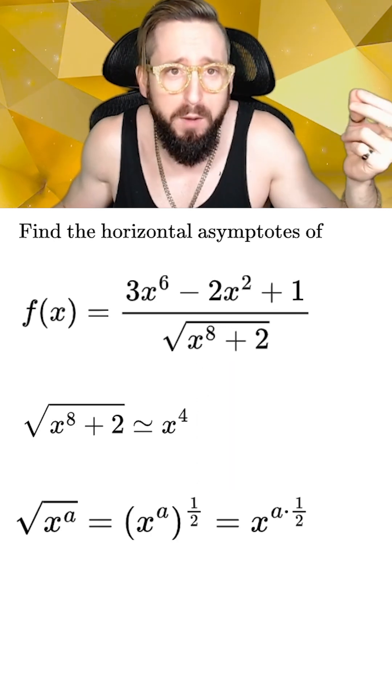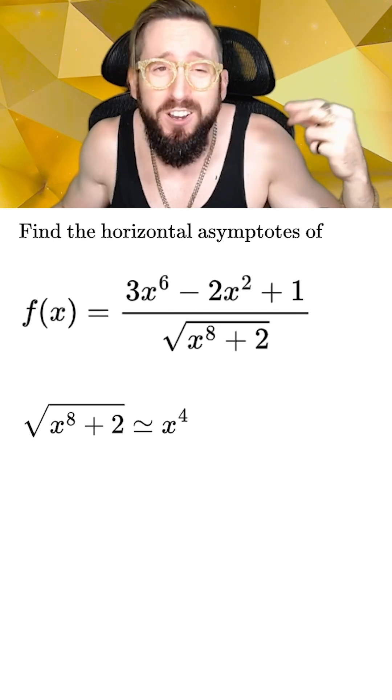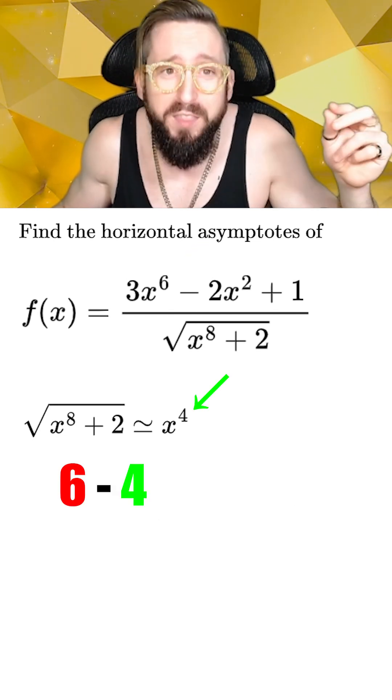And if we remember our exponent rules, raising a power to a power multiplies the powers together. This means that our new highest effective power is 6, which is still more than 1 greater than the 4 on the bottom.